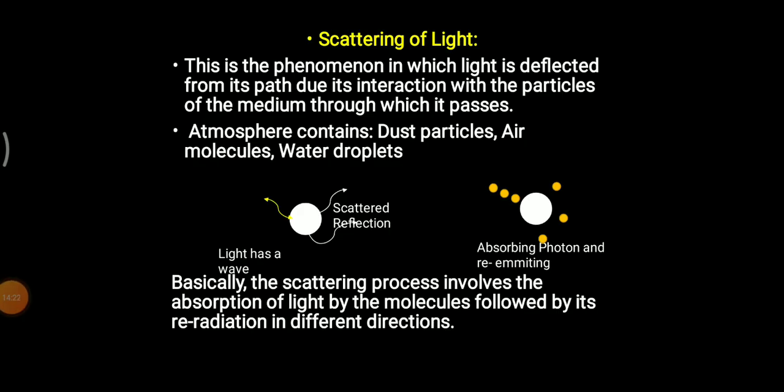Next concept: scattering of light. Like refraction of light, scattering of light is an altogether different concept — don't get confused between the two. Scattering of light is the phenomenon in which light is deflected from its path due to interaction with the particles of the medium through which it passes. Simply put, whenever a ray of light passes through different small particles, it undergoes scattering — meaning it will get split up into n number of directions.